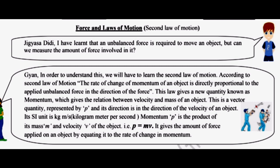...the relation between velocity and mass of an object. This is a vector quantity represented by p, and its direction is in the direction of the velocity of an object. Its SI unit is kilogram meter per second. Momentum p is the product of its mass m and velocity v of the object: p equals m v. It gives the amount of force applied on an object by equating it to the rate of change in momentum.